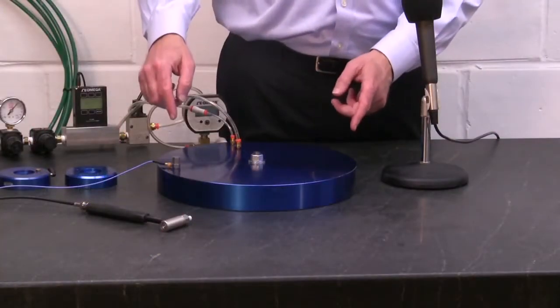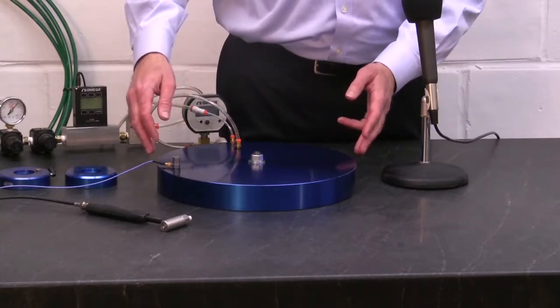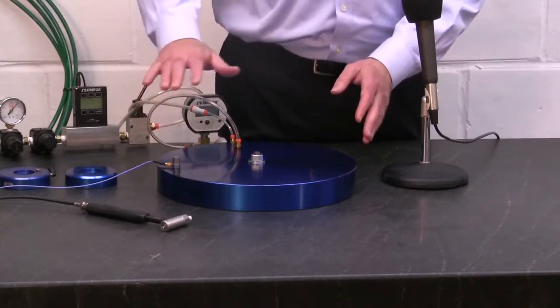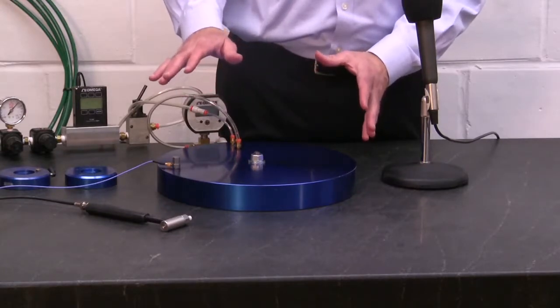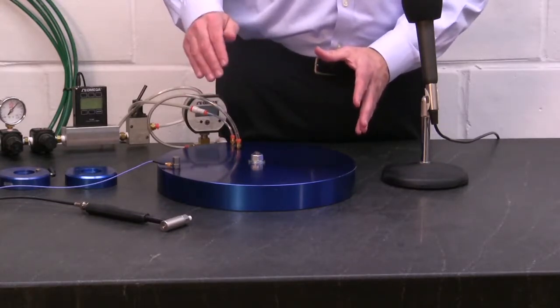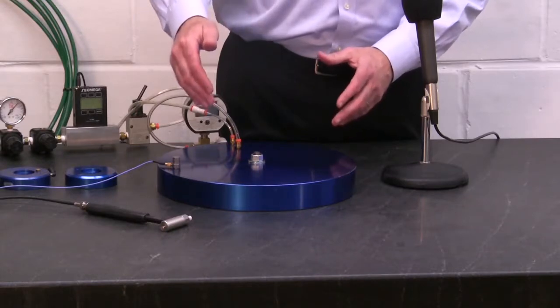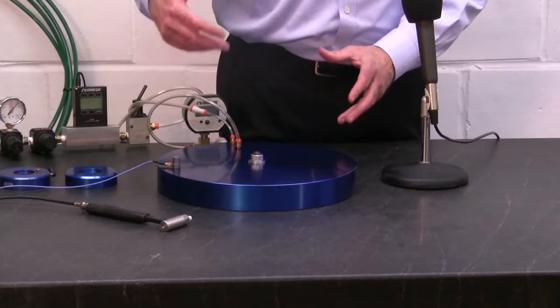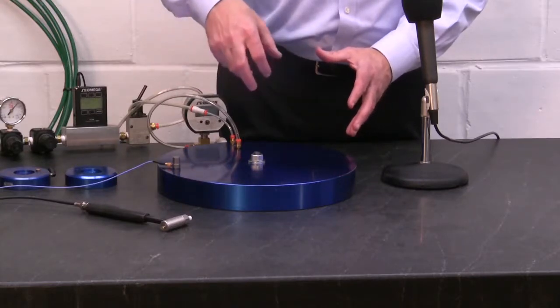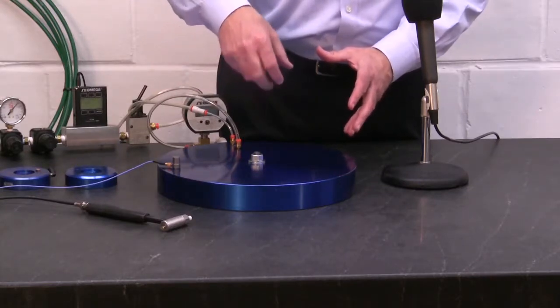The reason we are using a vacuum preloaded air bearing is because it allows us to load the air bearing films in a completely non-influencing fashion. So we know that any damping we might find is attributable to the air films, and it's not attributable to some structure that we may have coupled to the bearing in order to load the air bearing films.